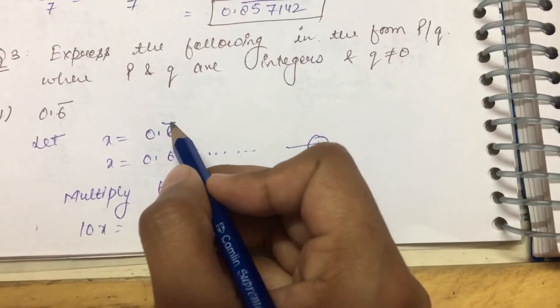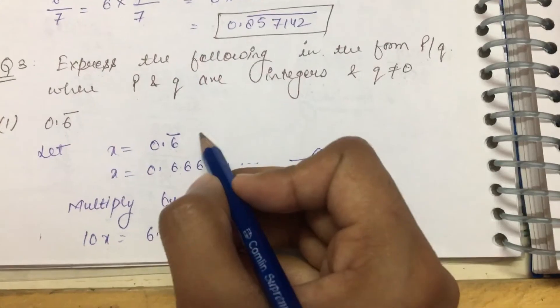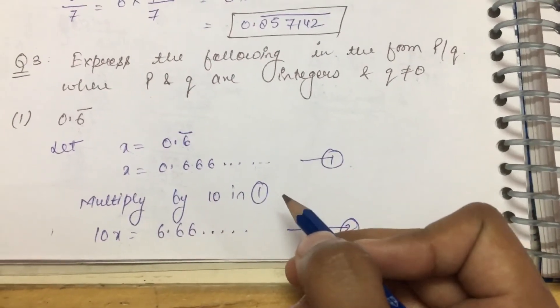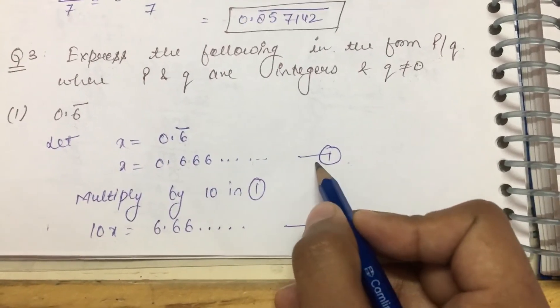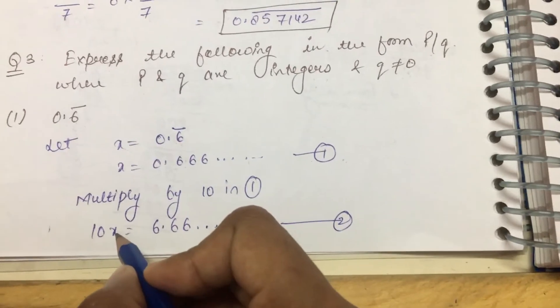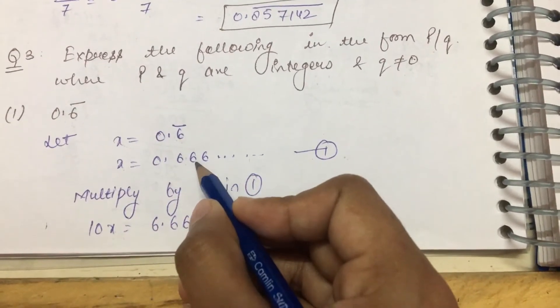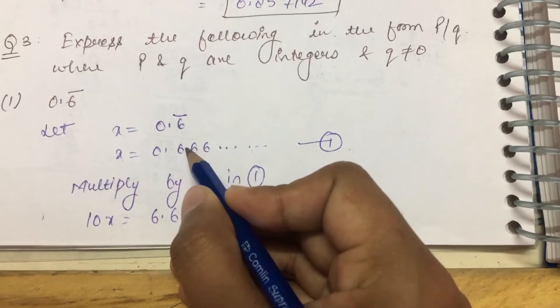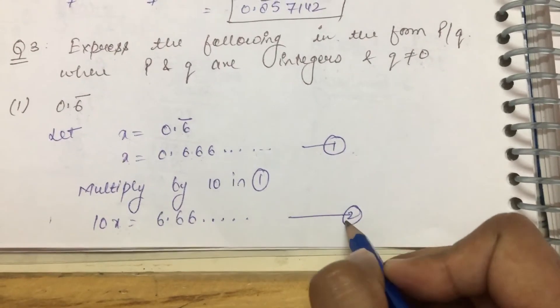If you have 1 digit repeating, multiply by 10. If you have 2 digits repeating, multiply by 100. So here with 1 digit repeating, multiply the first equation by 10. 10 times x equals 10x, and 10 times this number moves the decimal to get 6.666 and so on. This is equation number 2.